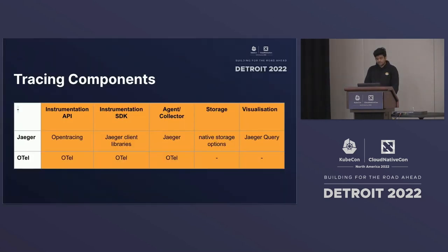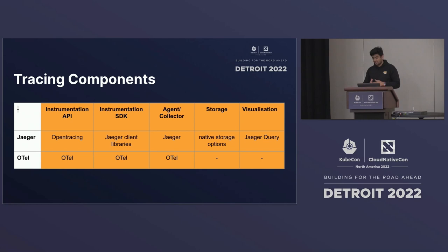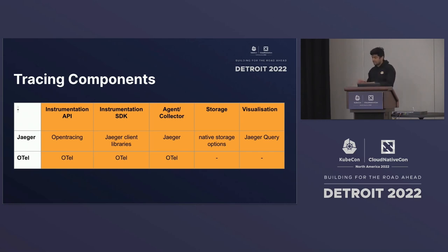Let's understand the components first. There are multiple components involved in tracing, both in Jaeger and OpenTelemetry. The instrumentation layer usually has API and SDK. In Jaeger, we use OpenTracing API and the SDK is Jaeger client libraries. The agent and collector is Jaeger. Jaeger also has an agent and collector, and it offers native storage options within the collector like Cassandra and Elasticsearch, plus a gRPC-based mechanism to plug external databases. Jaeger also has a visualization layer. In OpenTelemetry, there is only the instrumentation layer and the collector layer.